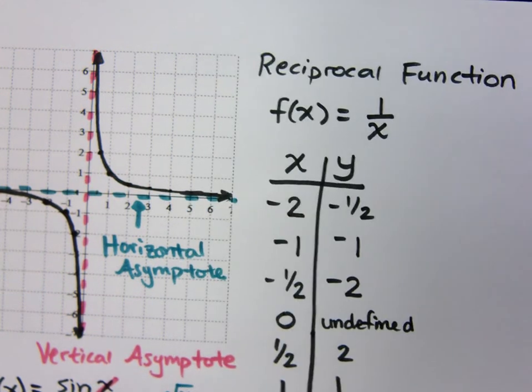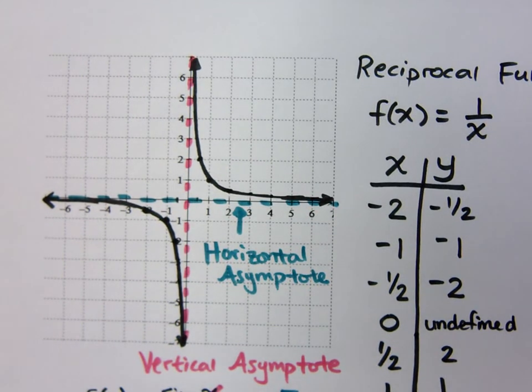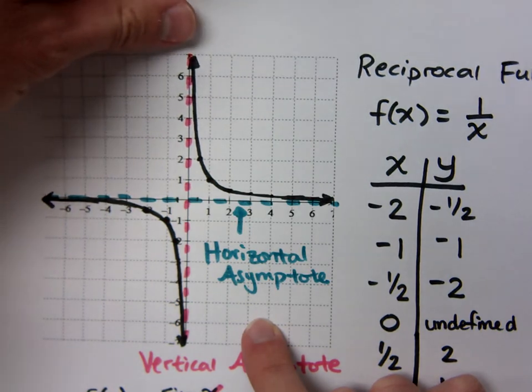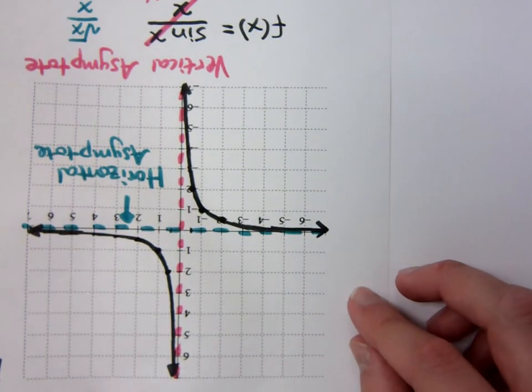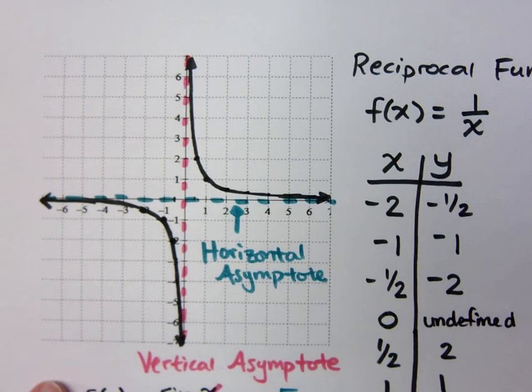Now, do you guys notice any type of symmetry exhibited by the reciprocal function? What type of symmetry do you see? Origin. I see origin symmetry. If I take this guy right here and I turn him upside down, it looks exactly the same except now the writing's upside down. Right? And here's how you can tell you have that origin symmetry. Okay?